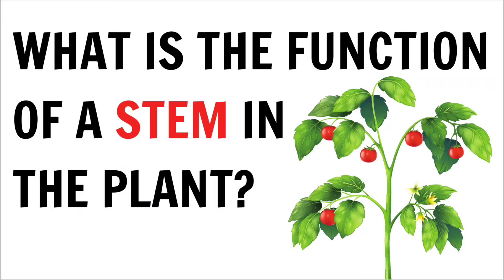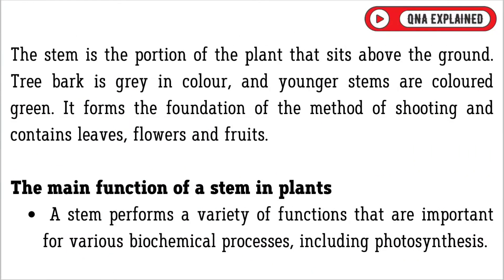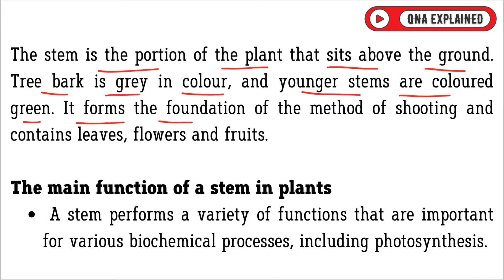What is the function of a stem in the plant? The stem is the portion of the plant that sits above the ground. Tree bark is grey in colour and younger stems are coloured green. It forms the foundation of the method of shooting and contains leaves, flowers and fruits.